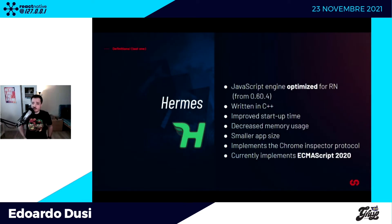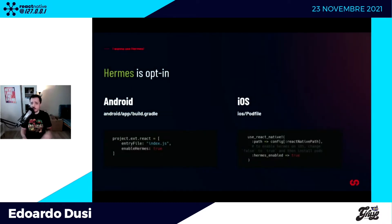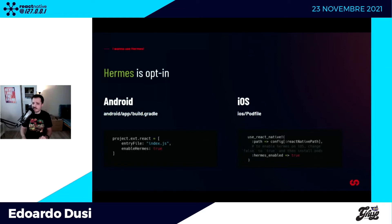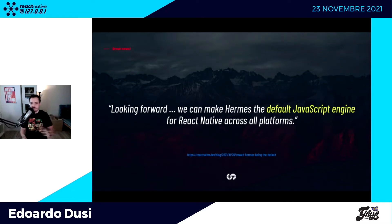Il nuovo attore in questo scenario è Hermes. Hermes è un JavaScript engine creato dal team di React Native, ottimizzato per React Native, disponibile dalla versione 0.60, e implementa ECMAScript 2020. Hermes al momento è opt-in, dovete specificare che è abilitato in build per Android e iOS. In prospettiva, come sottolineato in un blog post recente, Hermes diventerà il JavaScript engine di default di React Native, quindi conviene già andarlo a investigare.